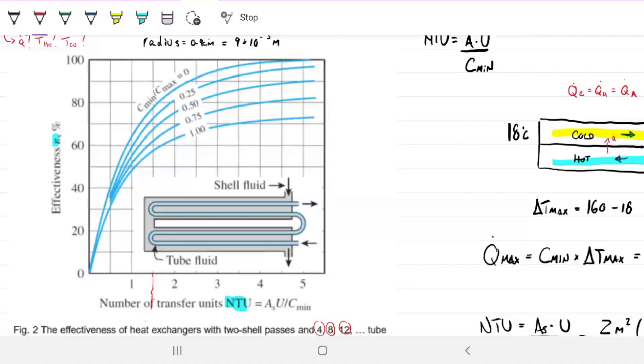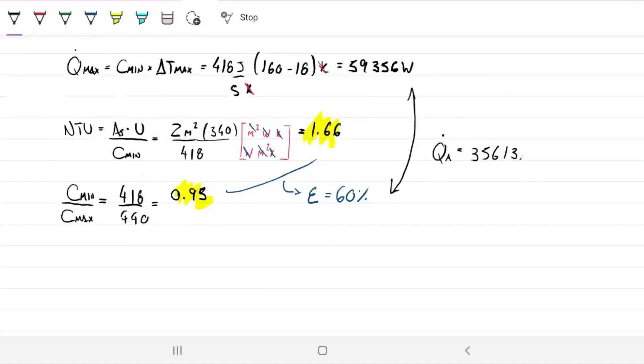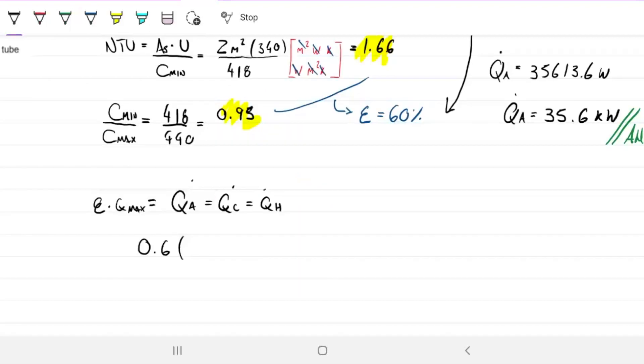So NTU would be around 1.6, and the effectiveness would be somewhere around here, probably. And my C ratio is very close to 1. So if NTU is 1.6 and the maximum I can get is 59, my actual is going to be 0.6 times 59.356, which is 35.6 kilowatts.